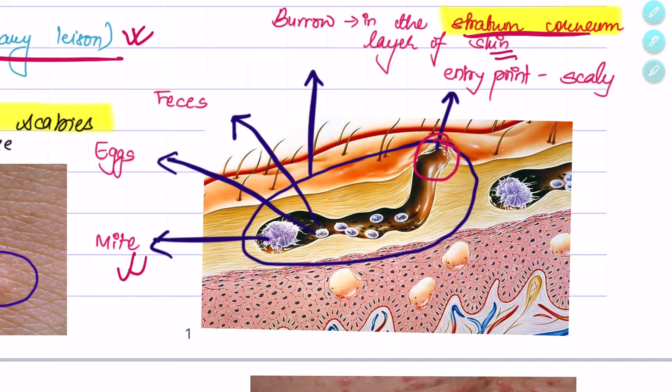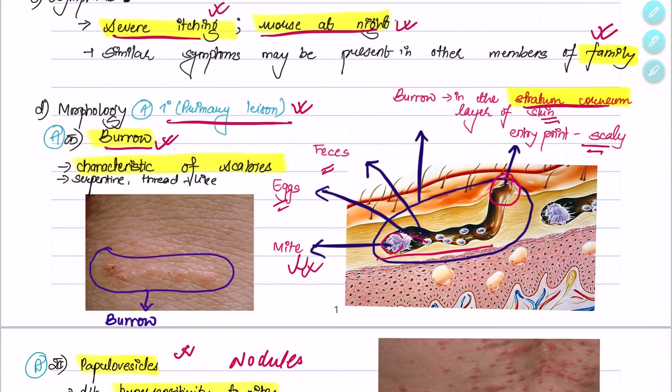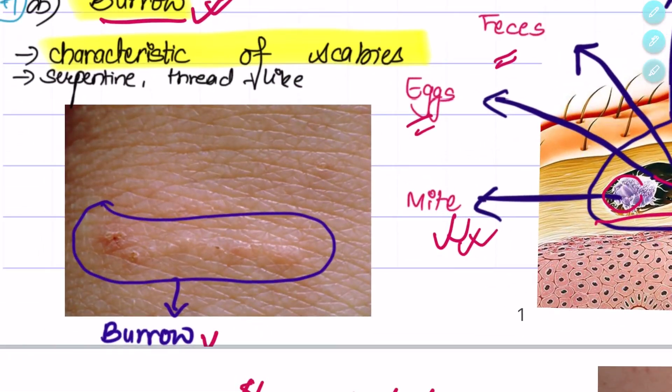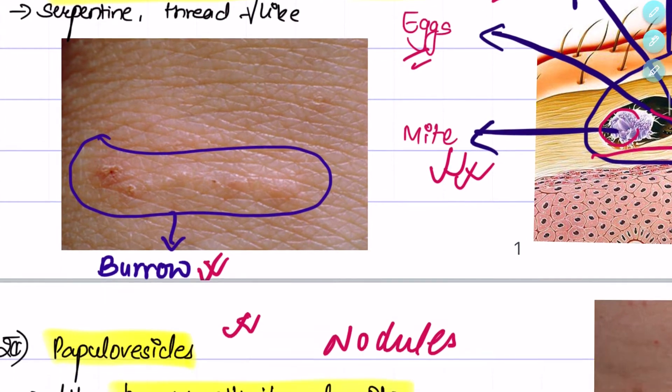It is formed in the stratum corneum layer of the skin, and the entry point is usually scaly. In the burrow we can find the mite, the eggs, and the feces. This is another picture where we can see the burrow in the skin.